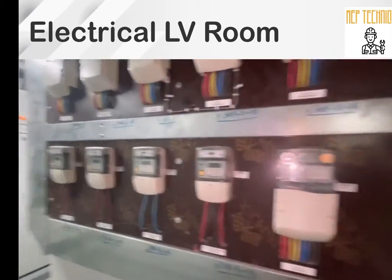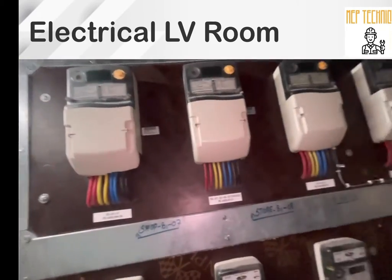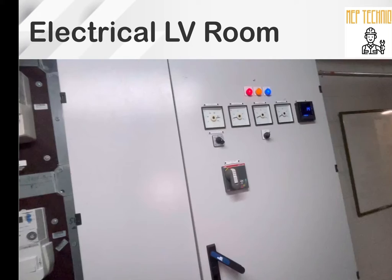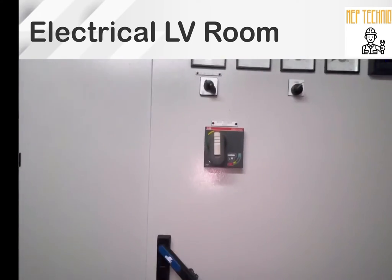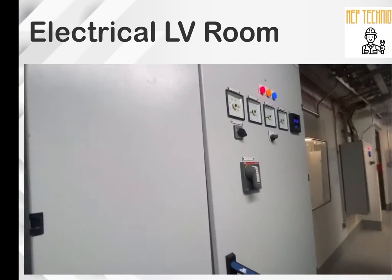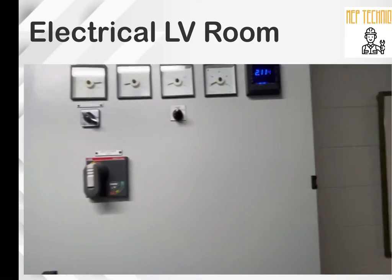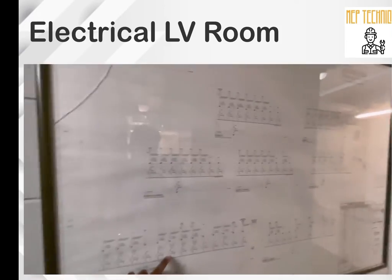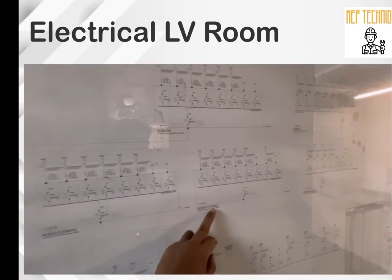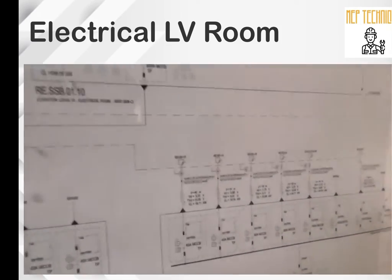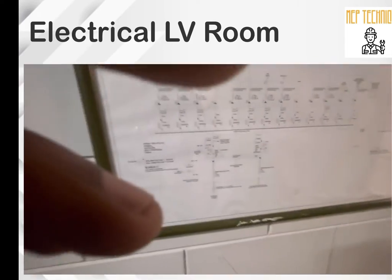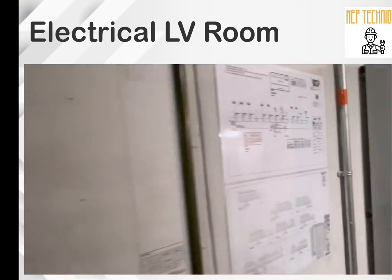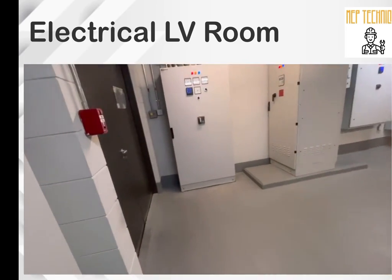These are the energy meters controlled by ADDC — Abu Dhabi Distribution Company. We cannot make any changes to these meters as they belong to ADDC. This is one of the sub-distribution panels (SMDB). The power is distributed from the MDB (main distribution board) to the SMDB, then from SMDB to the DB. Power first comes from the transformer to the MDB, then MDB to SMDB, and SMDB to DB.